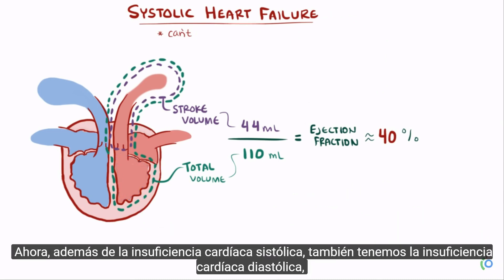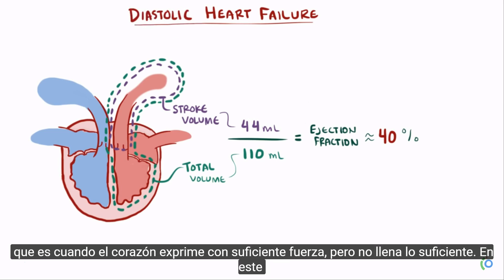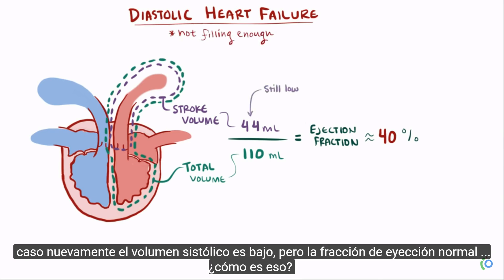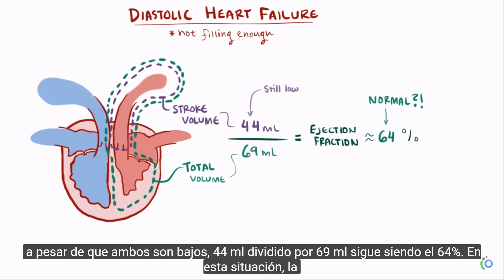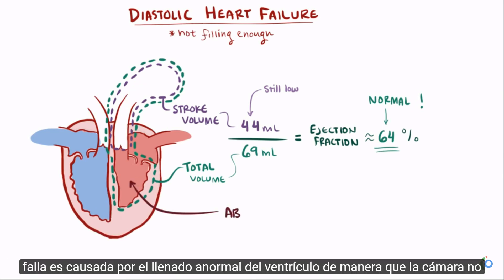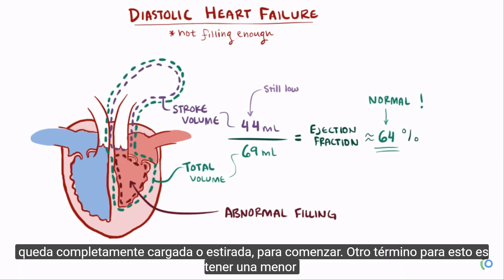In diastolic heart failure, the heart is squeezing hard enough but not filling quite enough. The stroke volume is low, but the ejection fraction is normal. Because the total volume is low — say about 69 milliliters — even though both are low, 44 divided by 69 is still 64%. The failure is caused by abnormal filling of the ventricle, so the chamber doesn't get fully loaded or stretched out in the first place.